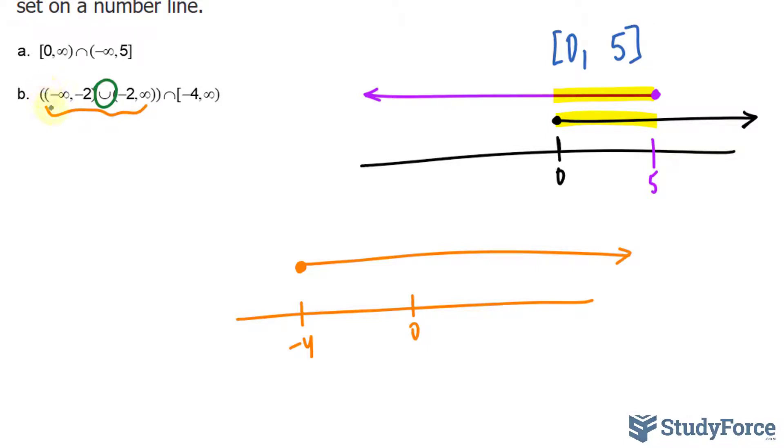So focusing in on this set right here, we have negative two to negative infinity. And because it can't be negative two, because it's a parenthesis, we'll put a hollow circle and it extends that way.